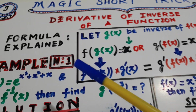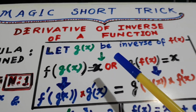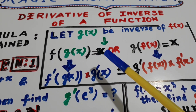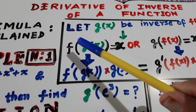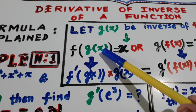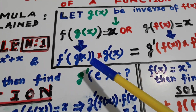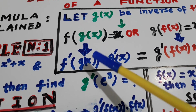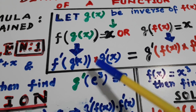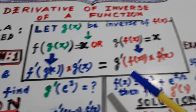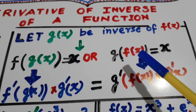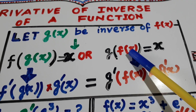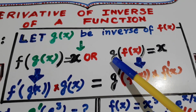The formula is explained like this. Let g(x) be the inverse of f(x). Then f of g(x) will be equal to x. Now let us find its derivative. Derivative of f is f dash of g(x). If it is equal to x, it means g will cancel f and x will remain. So they are inverse of each other.